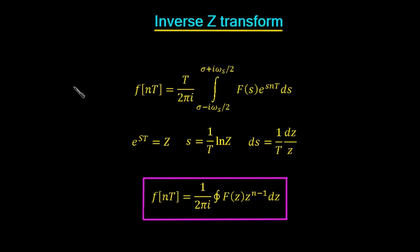That's all for the derivation of the forward and inverse Z-transform. We get a better understanding of why the Z-transform is defined as it is when we look at its properties, and most importantly the idea of time shifting. That's what we'll go on to next. Thank you for listening, see you in the next video.